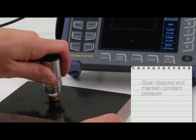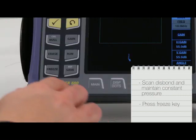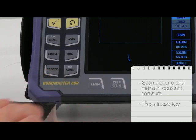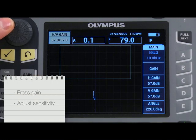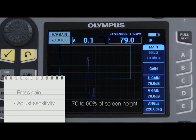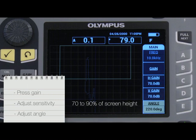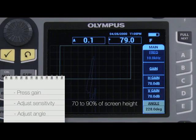Slowly scan over the simulated disbond while maintaining constant pressure. When done, press the Freeze key. Press the Gain key and adjust the sensitivity to have the disbond at 70-90% of the full screen height. If needed, adjust the angle of the signal. The basic calibration is now complete.